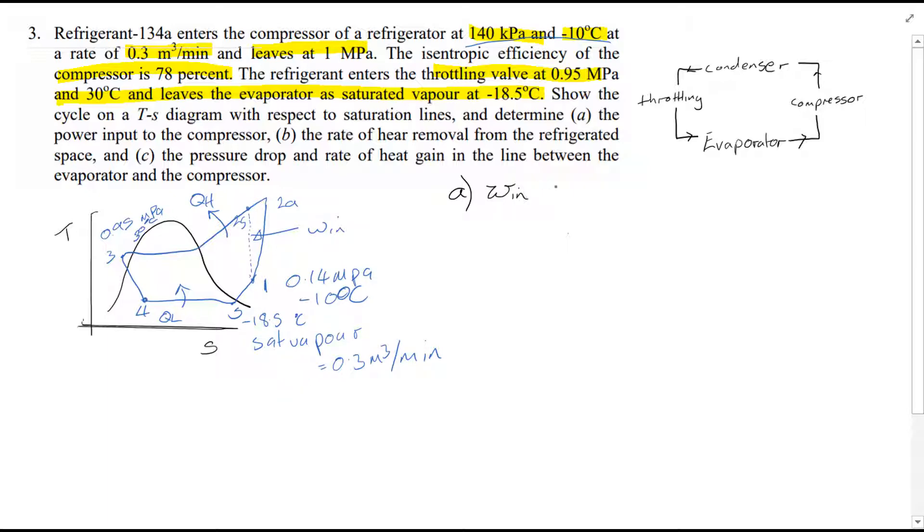So Wₙ, which we're interested in finding, the work input to the compressor, equals mass flow rate times (H₂A minus H₁). So in order to find Wₙ we need to find the value of mass flow rate, H₂A and H₁. Quite simply, at point 1 we're given a pressure P equal to 0.14 MPa and a temperature equal to minus 10 degrees C.